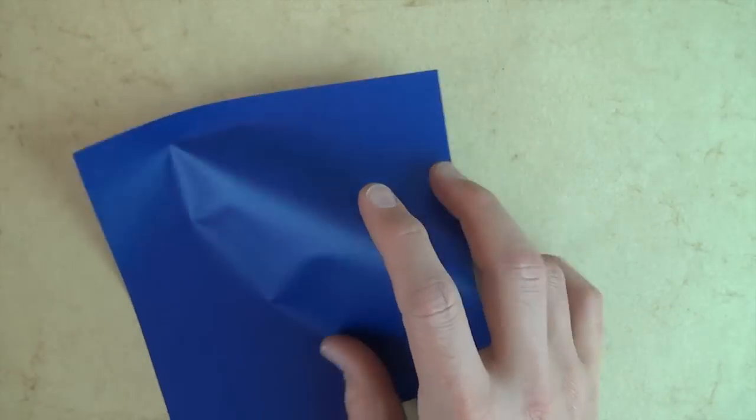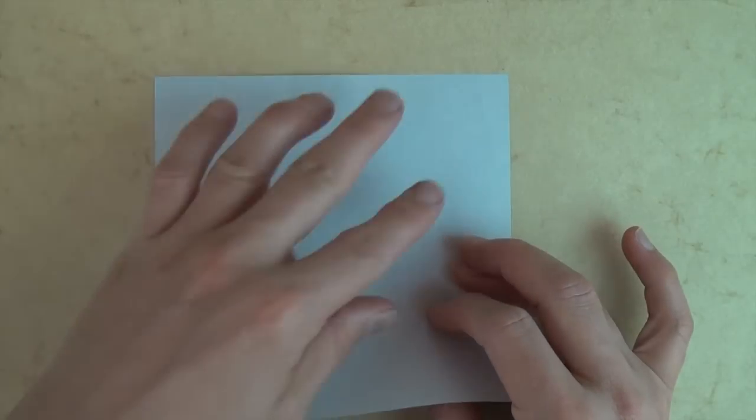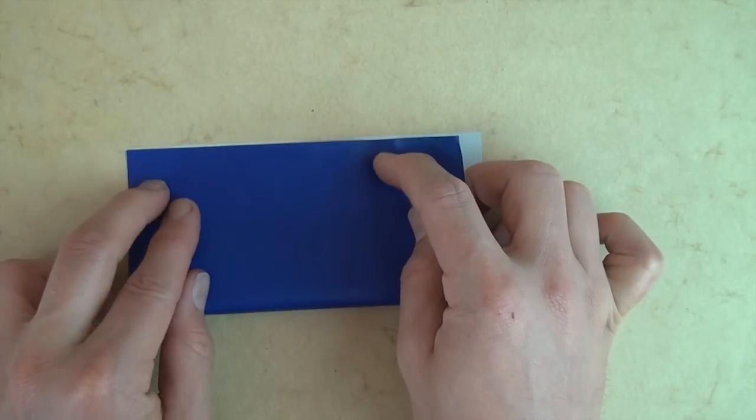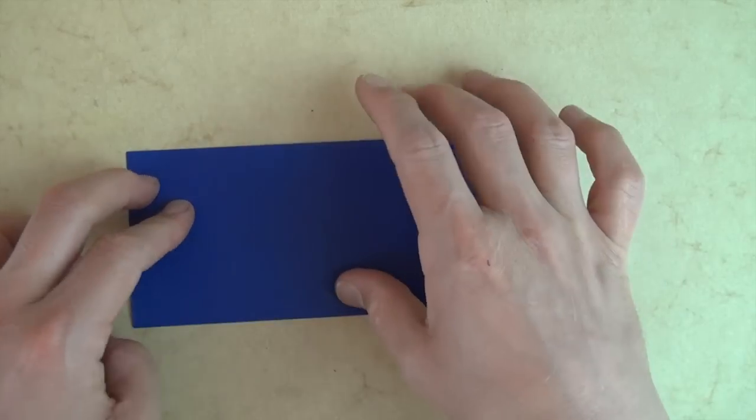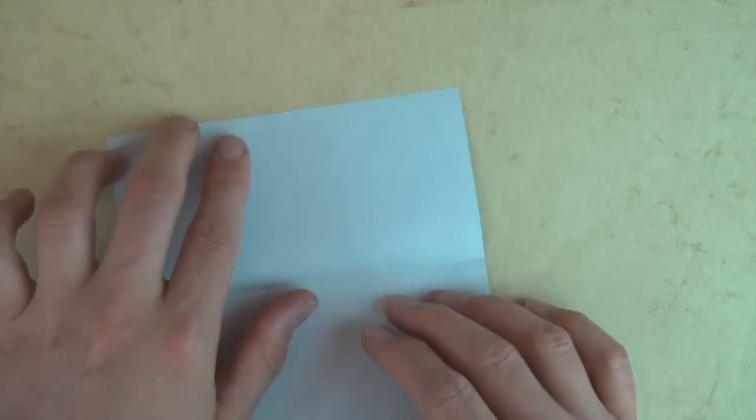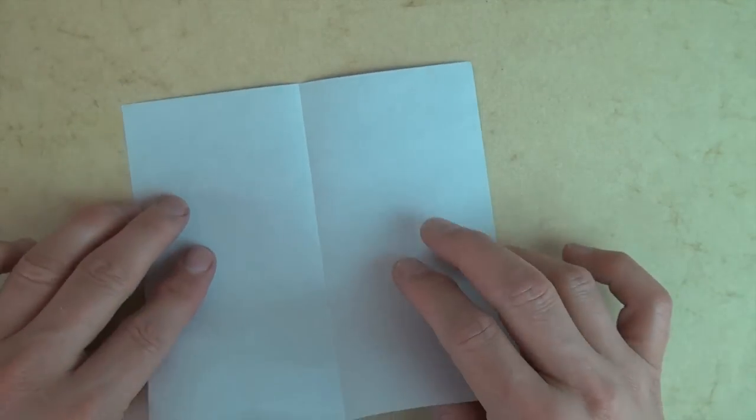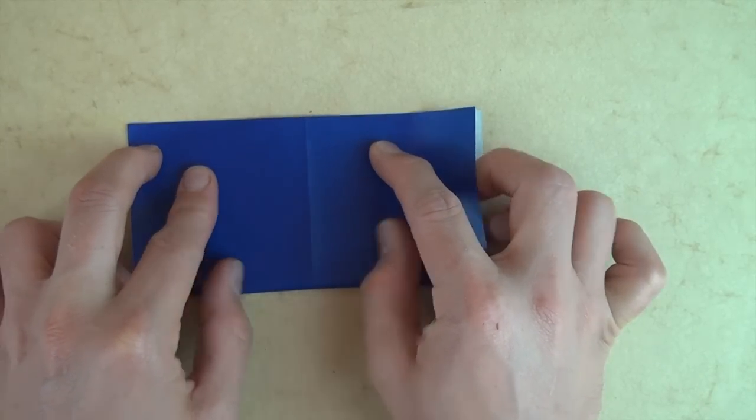So for this model, I'm going to start with a six inch square of kami, white side up. Let's valley fold in half. This model starts with a square base. So let's unfold and rotate 90 degrees and let's fold in half in this direction.